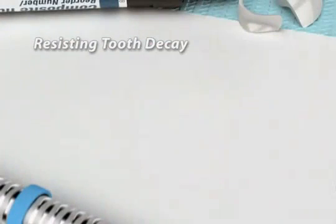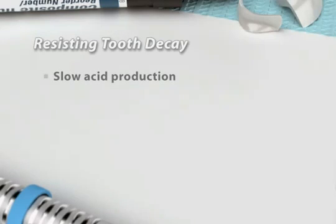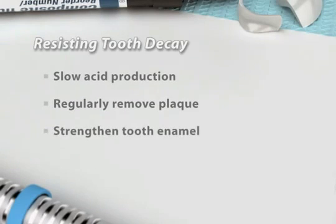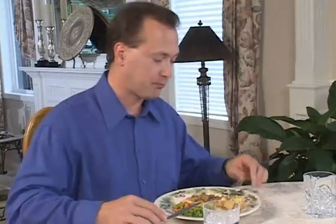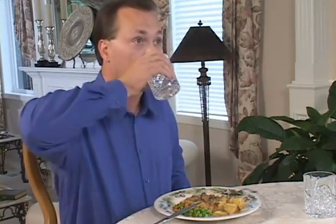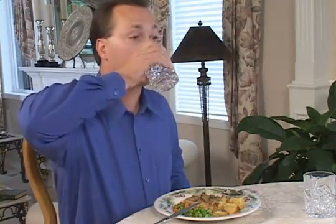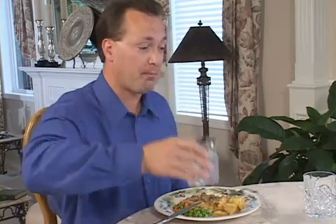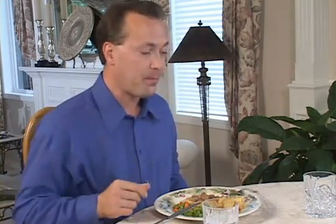You can resist tooth decay by regularly taking action to slow acid production, remove plaque from your teeth, and strengthen the tooth enamel. Cut down on acid production by limiting the number of times you eat each day, and reducing sugary and starchy foods and drinks in your diet.